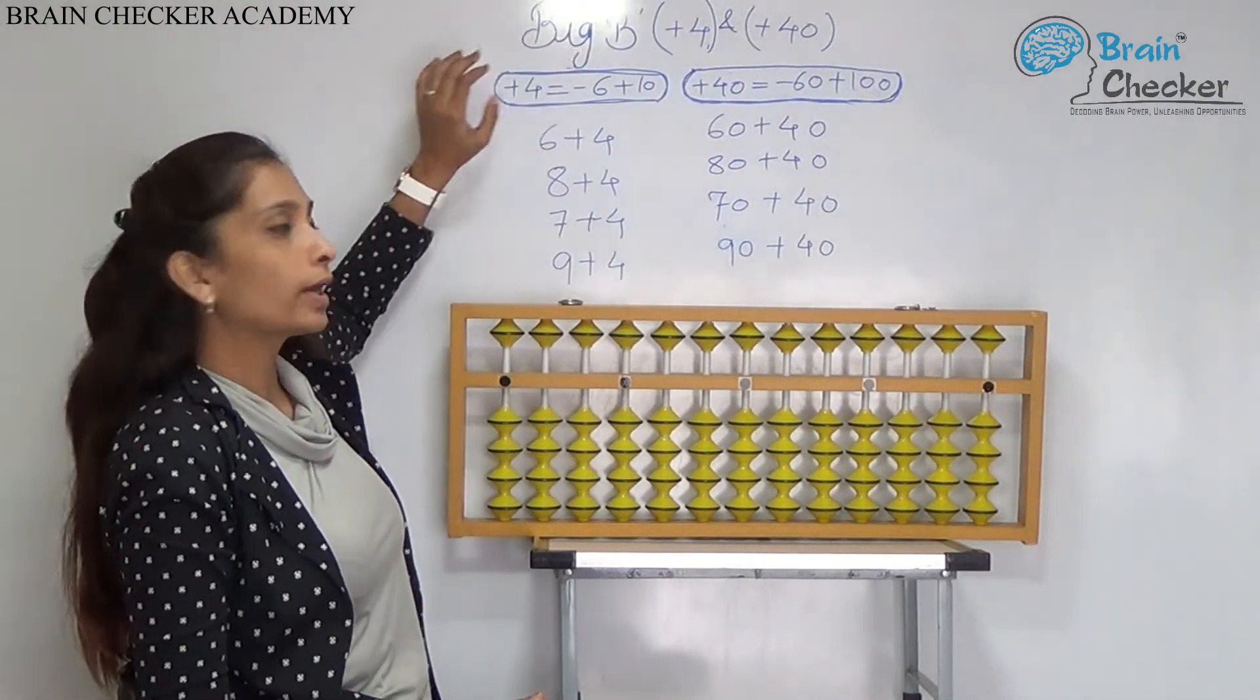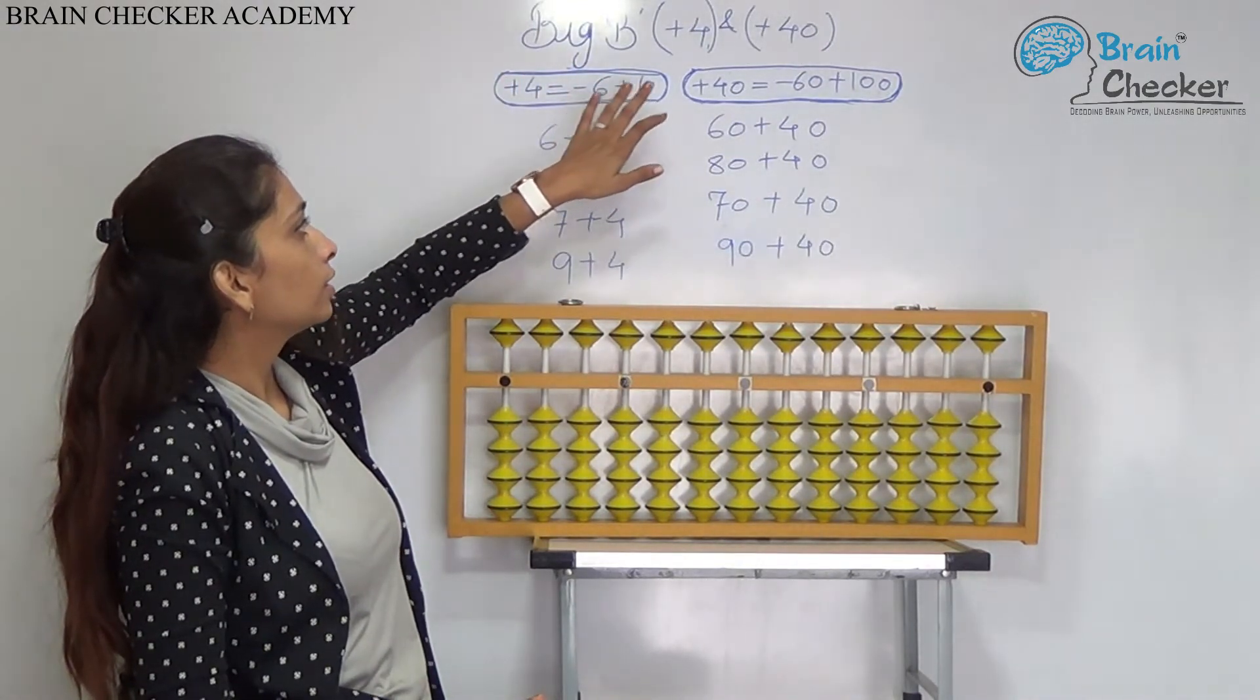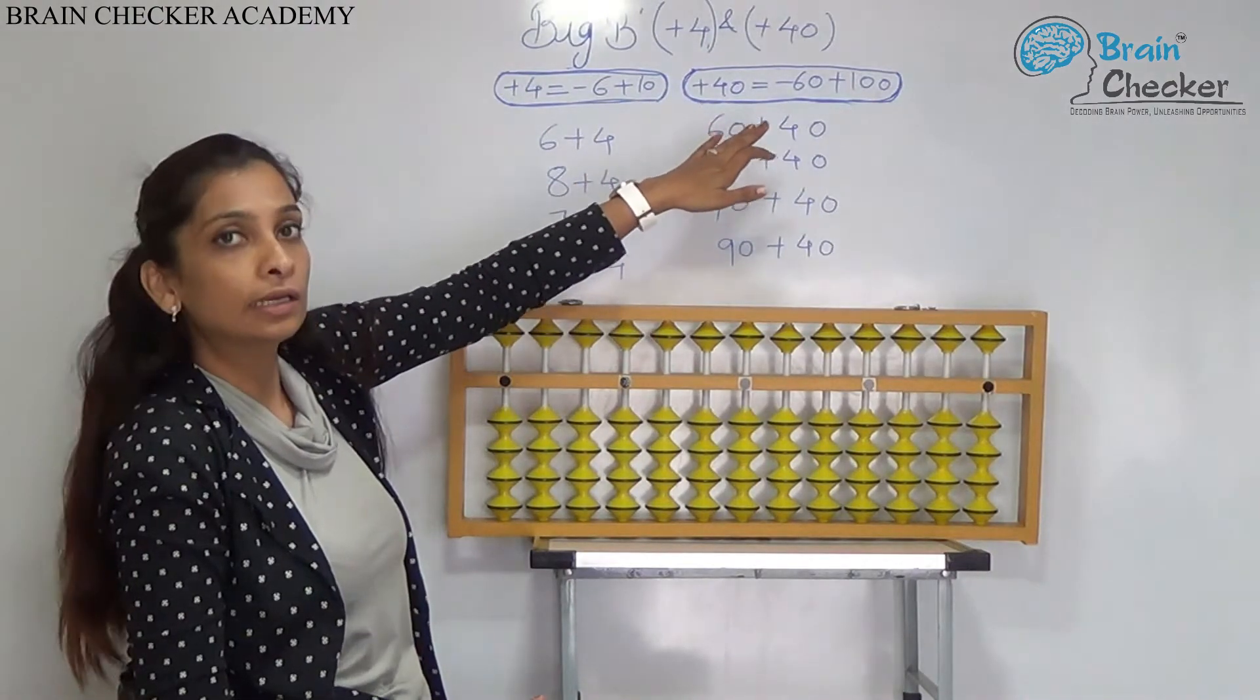What is the Big Brother formula for add 4? Add 4 is equal to less 6, add 10. And formula for plus 40 is less 60, add 100.